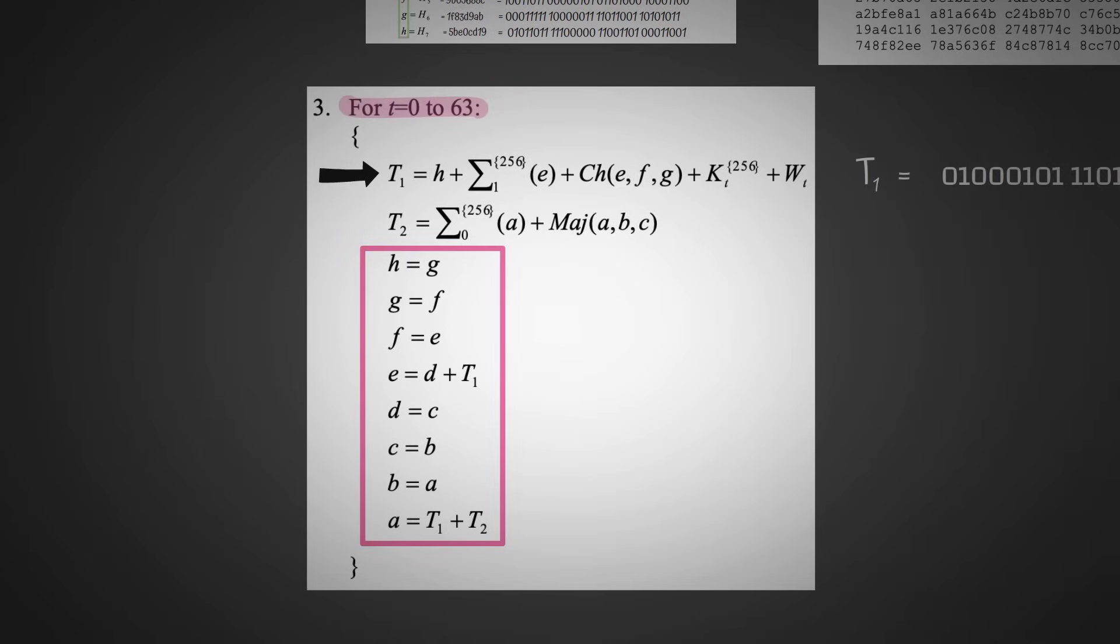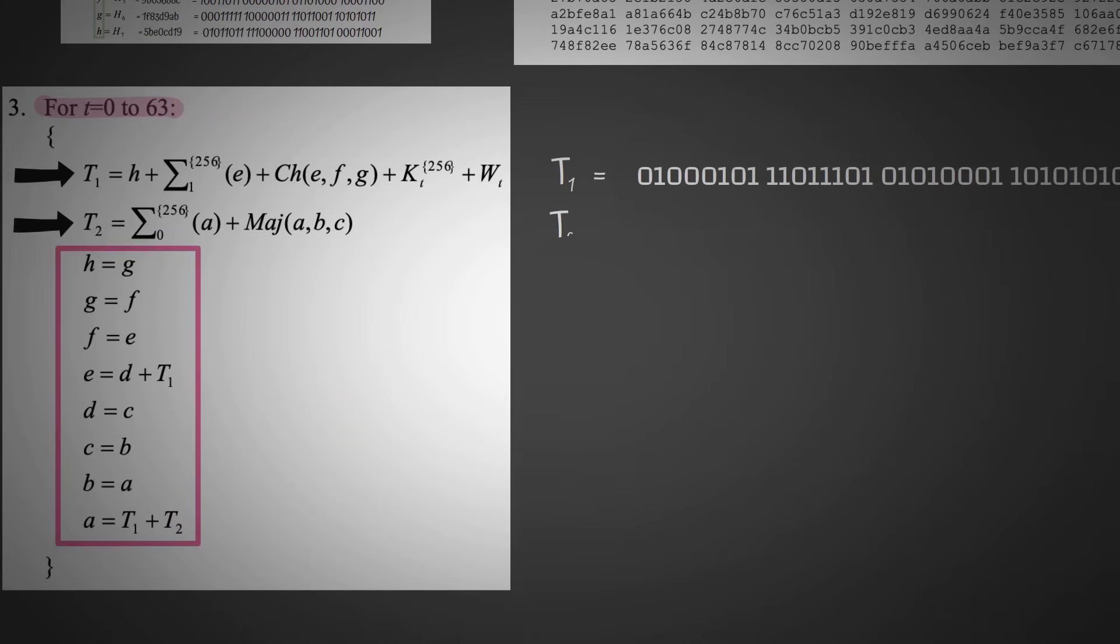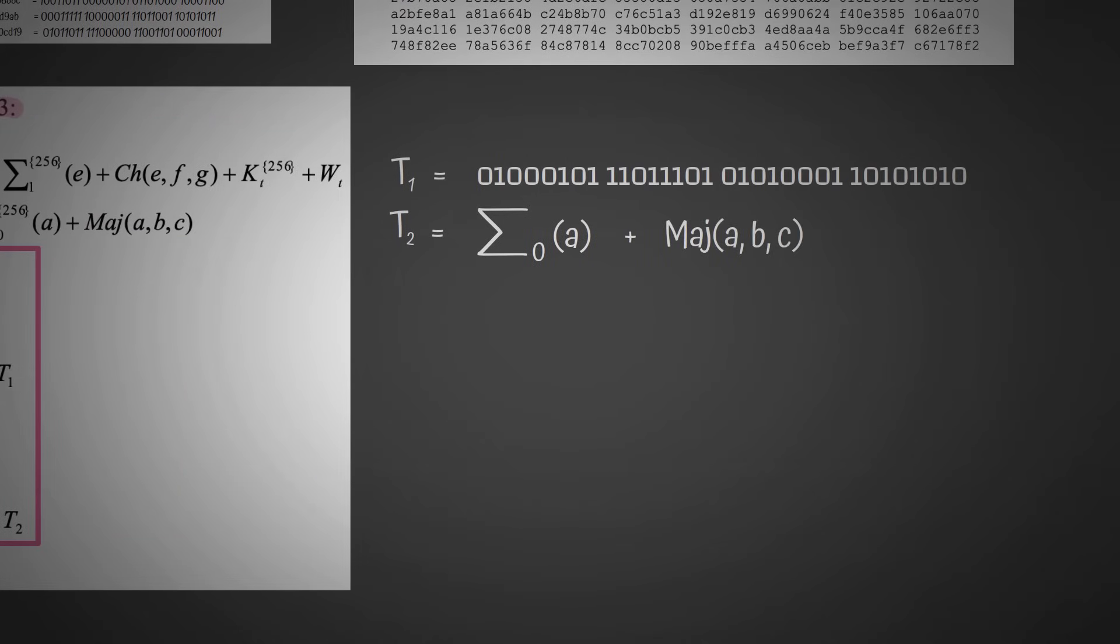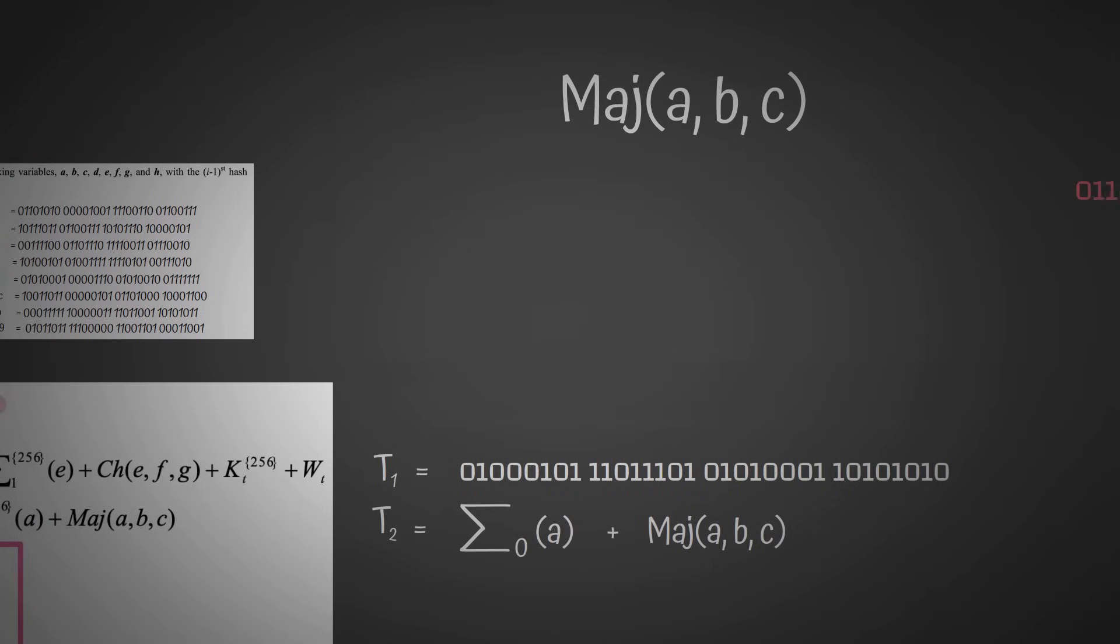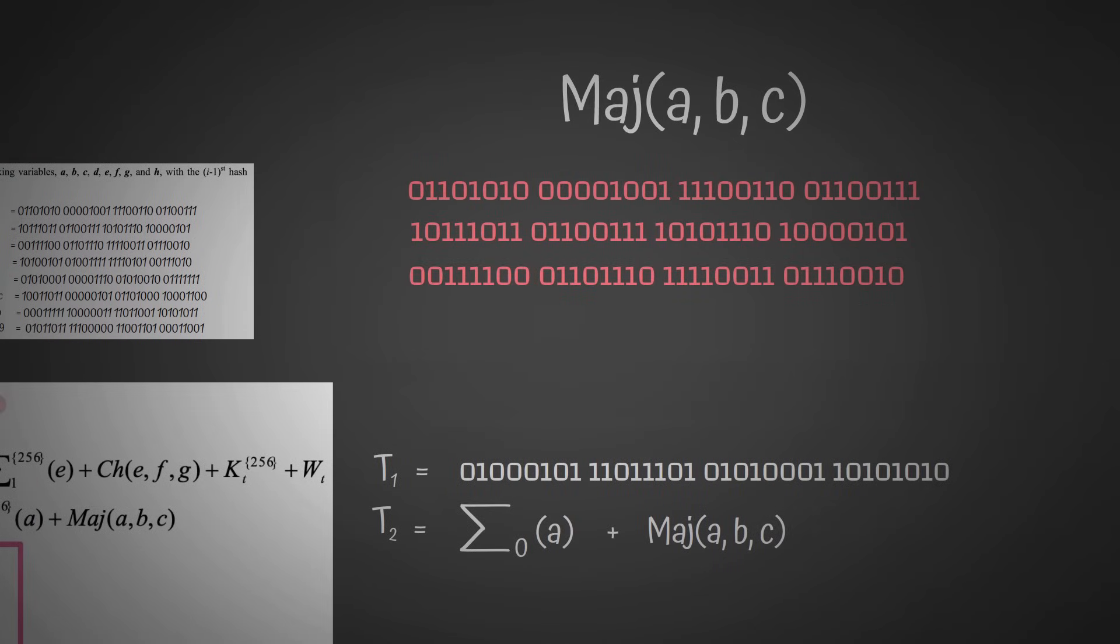This second part here, T2, what does that equal? T2 is capital sigma 0 of A plus MAG of A, B, C. What's going on here then? We know what sigma 0 is. MAG stands for majority, and there's no asymmetric role being played here, unlike the choose function.